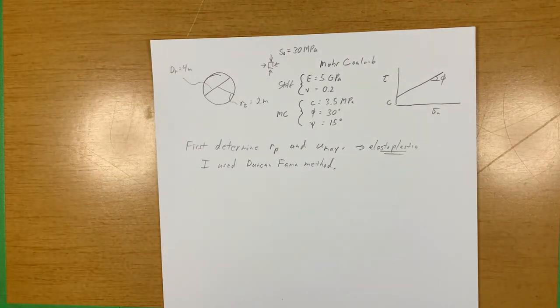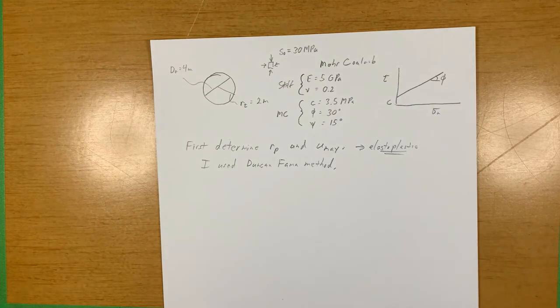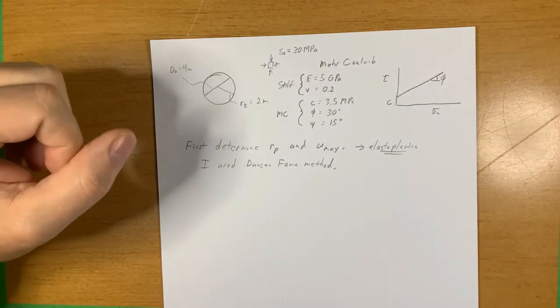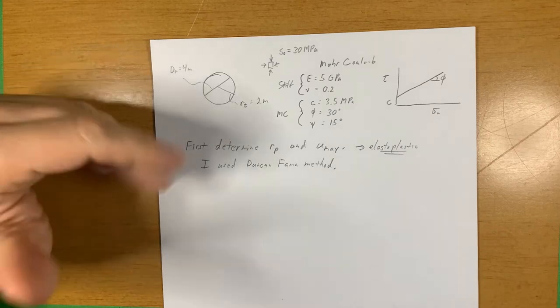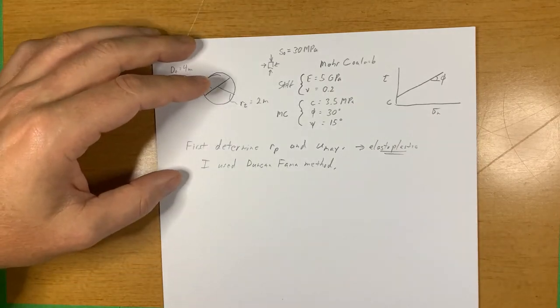So in this case, I'm going to use the Duncan-Fama method. I'm not going to go through the Duncan-Fama method in this tutorial. We're going to talk about the results and dealing with it and focus on the LDP and GRC.